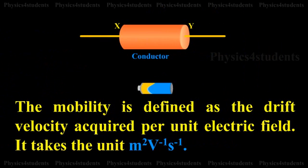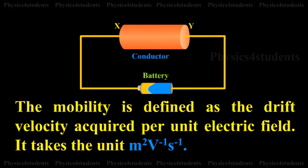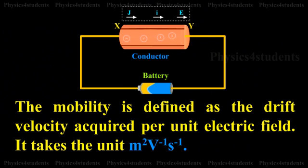The mobility is defined as the drift velocity acquired per unit electric field. It takes the unit m²V⁻¹s⁻¹.